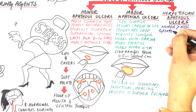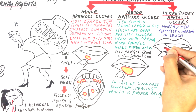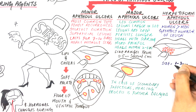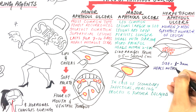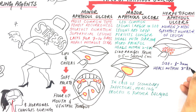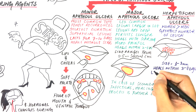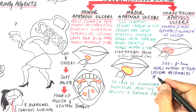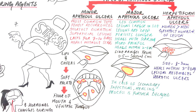The herpetiform type mostly affects women and consists of the greatest number of lesions. The lesions appear as small crops of extremely painful ulcers in the oral mucosa, having a size of about 1 to 3 mm in diameter, and may heal in a period of 3 to 7 days. These lesions resemble herpetic ulcers in appearance, but unlike herpes ulcers, they do not develop following vesiculation and the lesions do not possess the herpes virus.